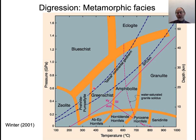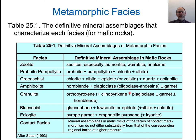We also talked about the metamorphic facies, where the mineralogy of mafic rocks says something about pressure and temperature — whether you have a greenschist facies assemblage versus an amphibolite facies assemblage. These are all the different assemblages; amphibolite is characterized by specific minerals that are different than, say, the blueschist facies.